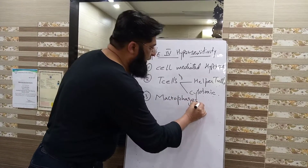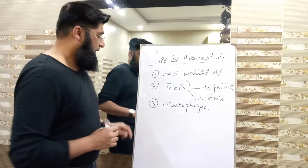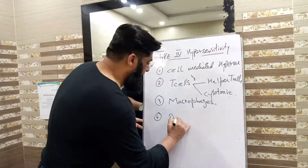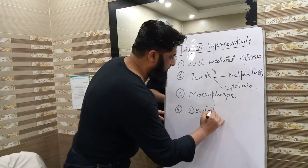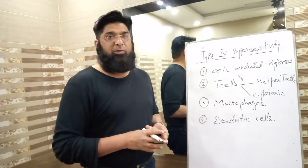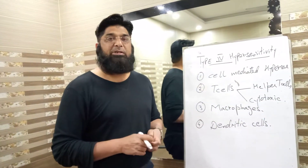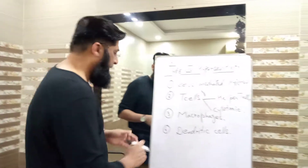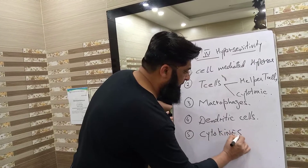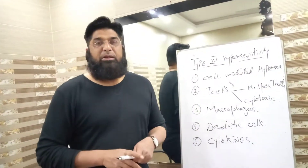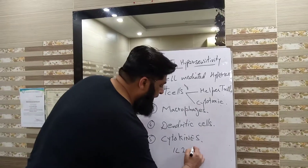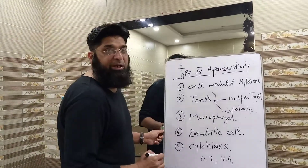Third point: macrophages are also involved. Number 4: dendritic cells are also involved. These dendritic cells are present in the epidermis of the skin. Number 5: cytokines — the main cytokines being interleukin-2, interleukin-4, and gamma interferons.